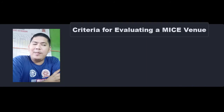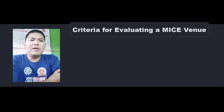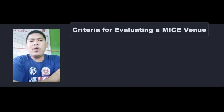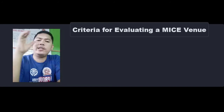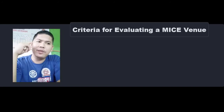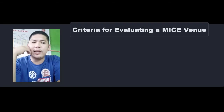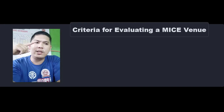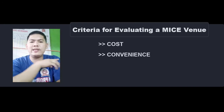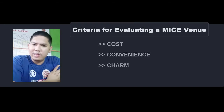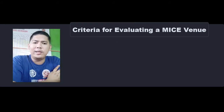Let's move on to the criteria for evaluating a MICE venue. Three words starting with the letter C can be used to encapsulate the general criteria for selecting the venue of an event: Cost, Convenience, and Charm. The first is Cost. Cost is a common factor in decision making, not only for event venues. To be selected, the venue must be within the budget of the organizer, and its payment terms must match the schedule of the event's cash flow.